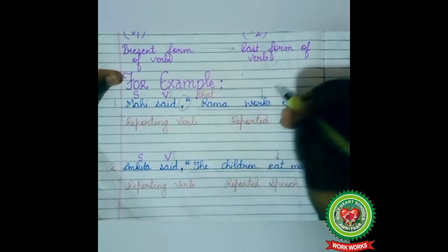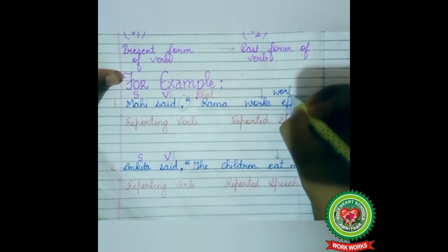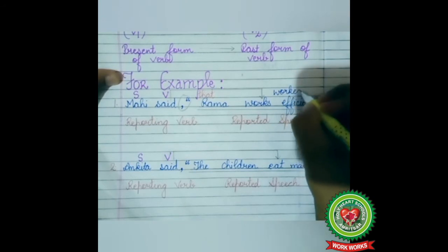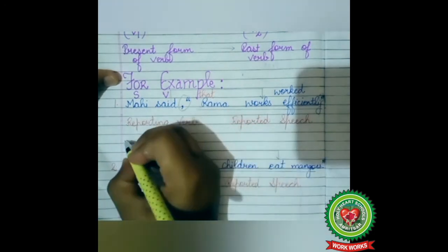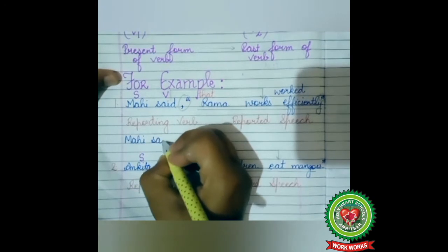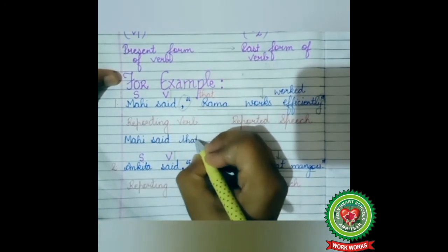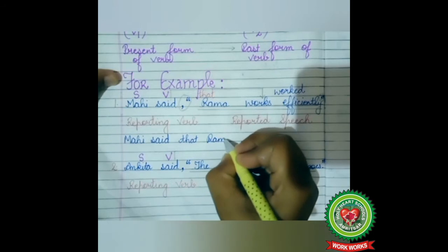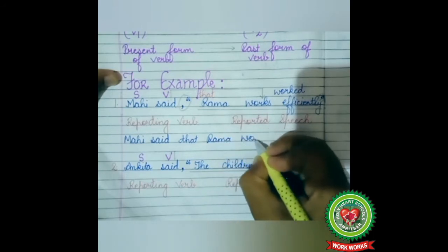The reporting verb 'said' is in past tense, so the reported speech will change into simple past tense. In place of 'works' we will use 'worked.' So our answer will be: Mahi said that Rama worked efficiently.